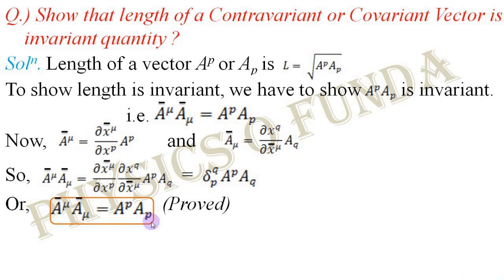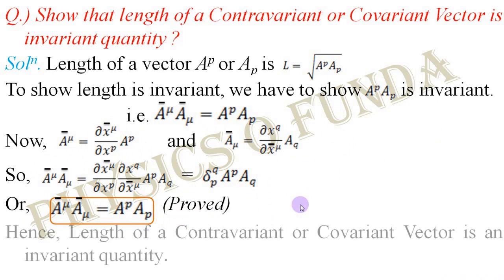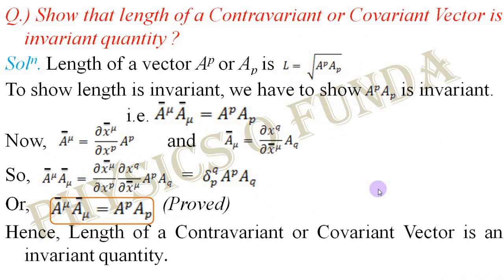From this equation it is clear that the term within the square root, A^p A_p, is invariant because its form remains unchanged in both barred and unbarred coordinates. So the length of a contravariant or covariant vector is an invariant quantity.